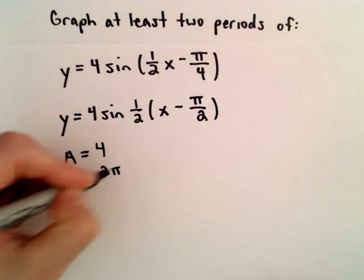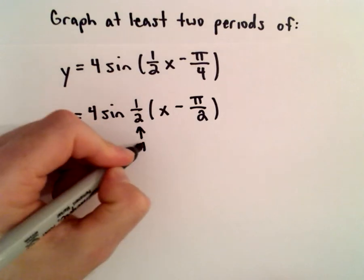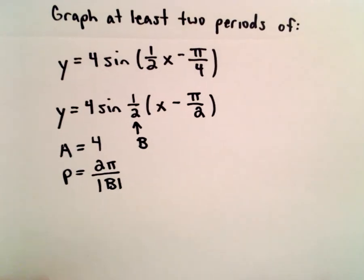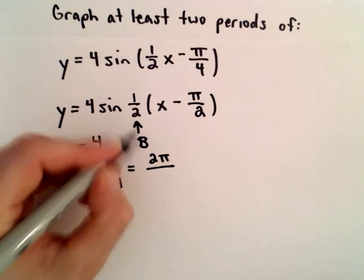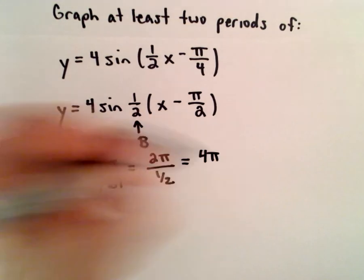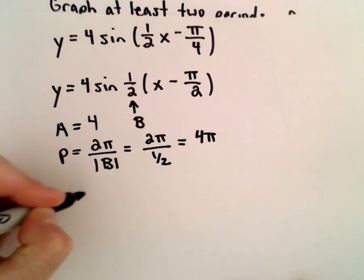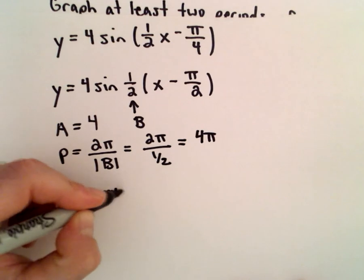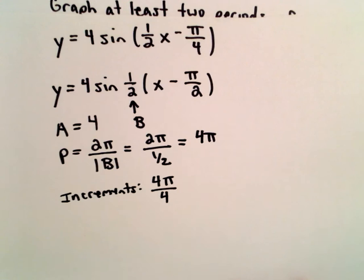The period is going to be 2 pi over the absolute value of b. Well, that's the whole reason why we factor that out, I guess that's part of the reason. The absolute value of 1 half is just 1 half, and that will give us 4 pi. 2 pi divided by 1 half will be 4 pi. To get the increments on the x-axis, I take the period and divide it into four equal pieces, and that will give us exactly pi.